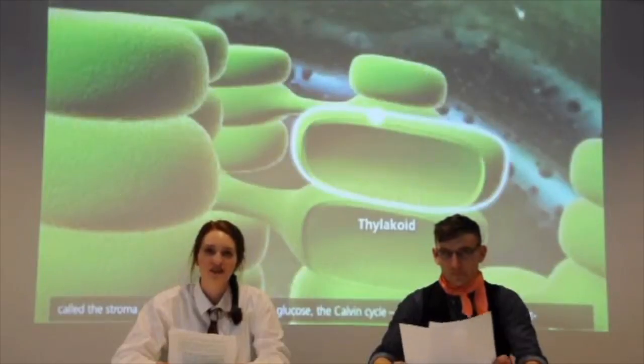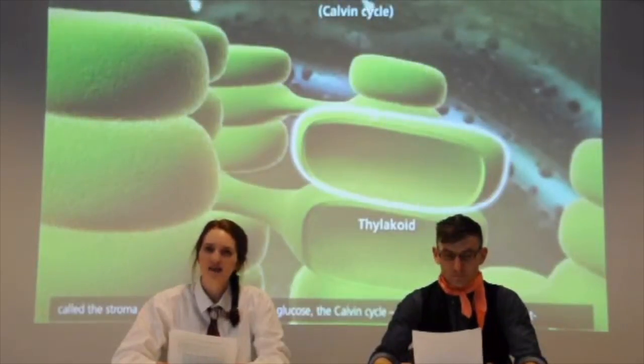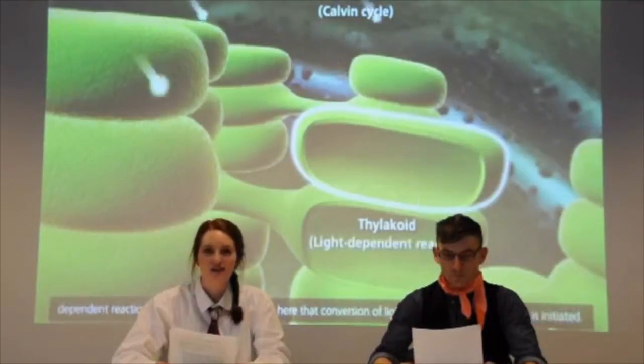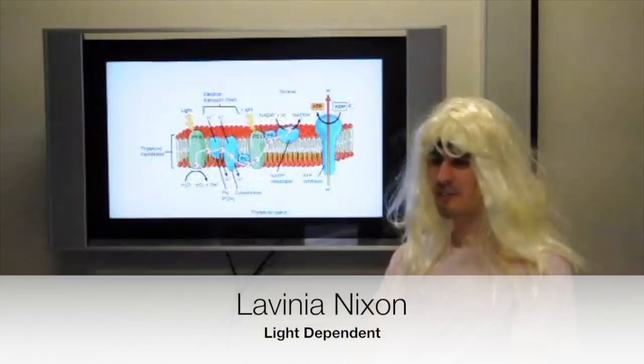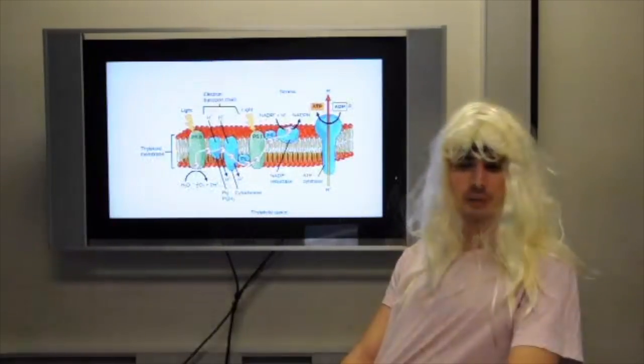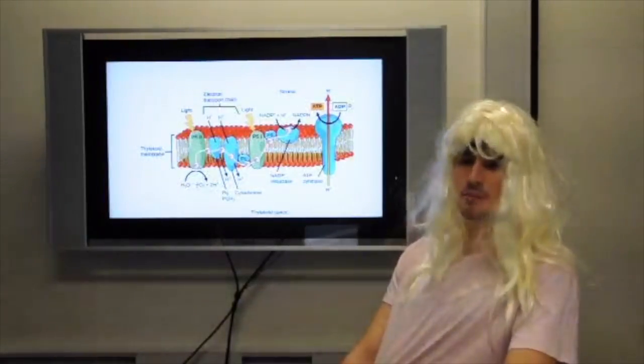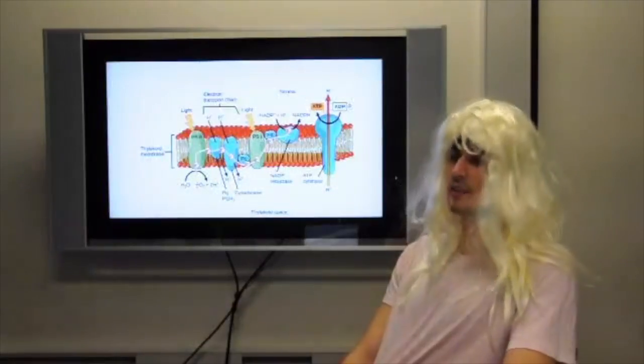Photosynthesis occurs in two main stages: light-dependent and light-independent reactions. Here to give you the forecast on light-dependent reactions, it's over to Lavinia. Well, the first process is actually split into two pathways. The main pathway, which is non-cyclic, and then we also have a secondary cyclic pathway. Let's jump into the predictions for the non-cyclic pathway for this week.